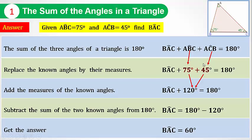Now add the measures of the known angles: 75 degrees plus 45 degrees equals 120 degrees. Then we have BAC plus 120 degrees equals 180 degrees. Subtract the sum of the two known angles from 180 degrees. So BAC equals 180 degrees minus 120 degrees. Then BAC equals 60 degrees.